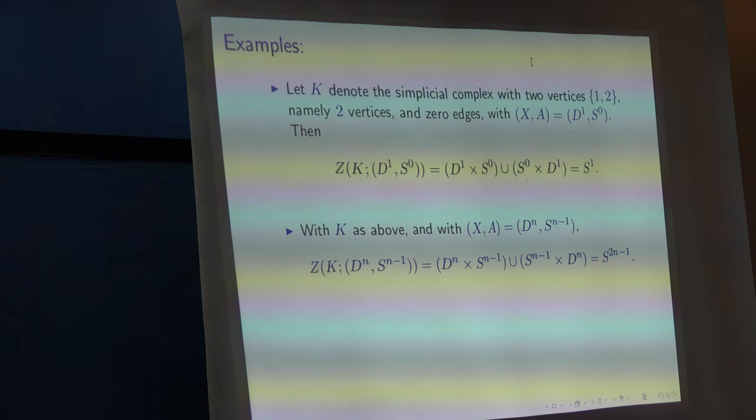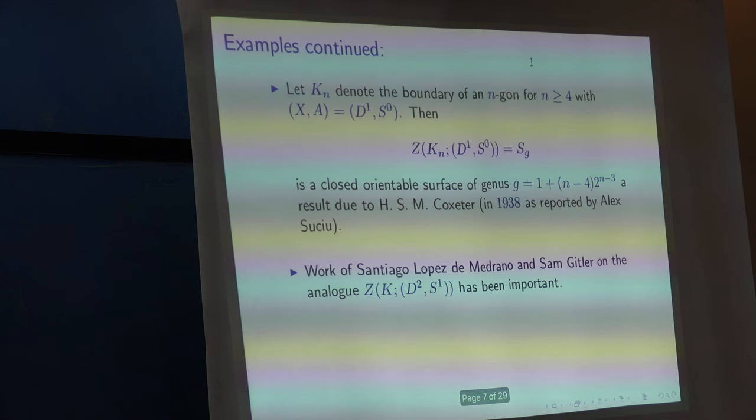So, all we're going to do in this lecture is construct a few more naive examples and to try to see if they have something interesting attached to them. Well, the first case we're going to look at is where, again, XA is D1 and S naught. That's part of the sliced tongue theorem. And KN was the simplicial complex, which is the boundary of an N-gon. So, it just has N vertices and N edges.